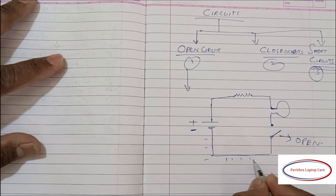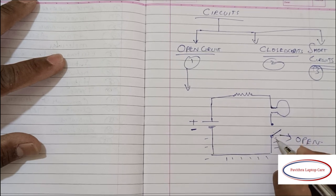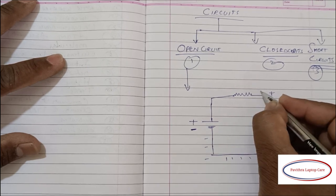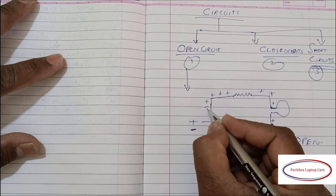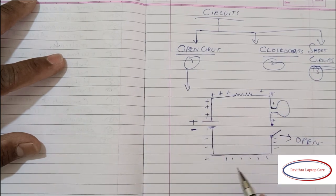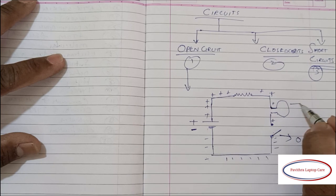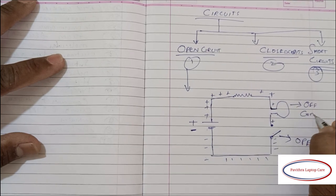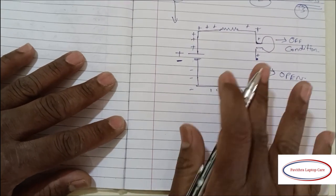In this, the flow of electrons won't complete because of the switch. The flow of electrons always goes from negative terminal to positive terminal. Then only we call it a closed circuit.